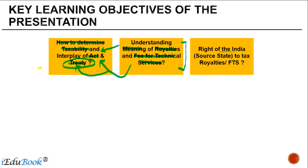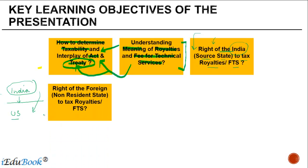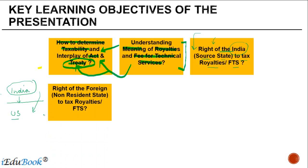The third learning objective is the right of India, or the source state, to tax royalties and FTS. In this example, if there is a person in India who makes a payment to a person in the US, India has the right to tax these payments if they arise in India. In this case, India is known as the source state and the US is known as the state of residence.